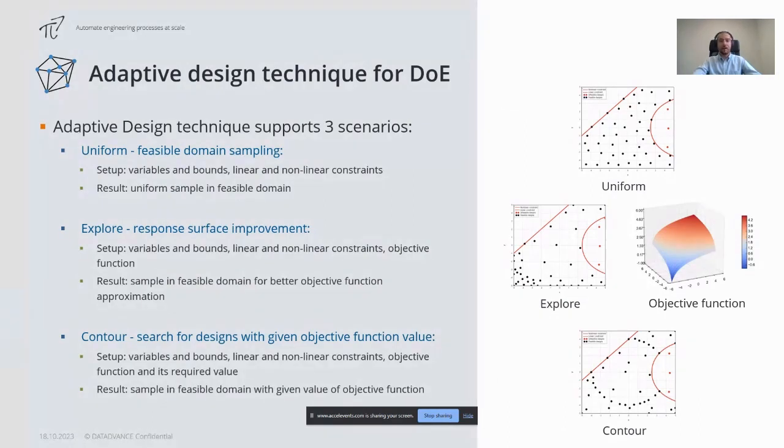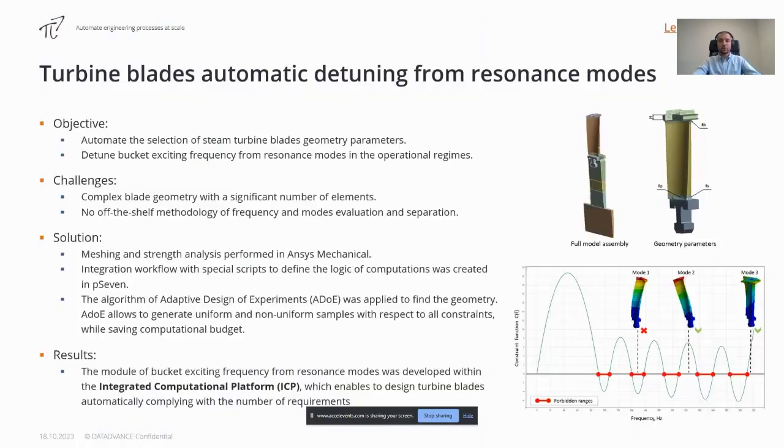In simple words, adaptive design technique allows you to find a set of designs taking into account the limitations. For example, in this use case we only know what restrictions we need to comply with, but we still want to obtain a set of feasible designs for future research with a limited budget. The goal of this study was to find the designs of a turbine blade whose eigenfrequencies wouldn't interfere with the exciting frequency of the turbine to avoid resonance.